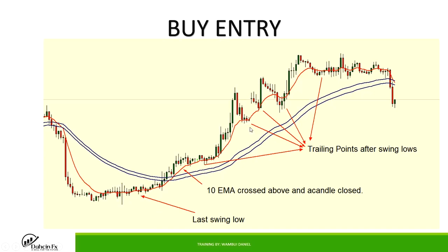Then let the trade run, trailing your stop loss using swing lows since you're in a buy going higher. Whenever there's a new swing low, move your stop loss up to just below it. You enter the buy here, trail the stop to each new swing low, and you will have gone all the way up, locking in profits until the trailing stop is hit.